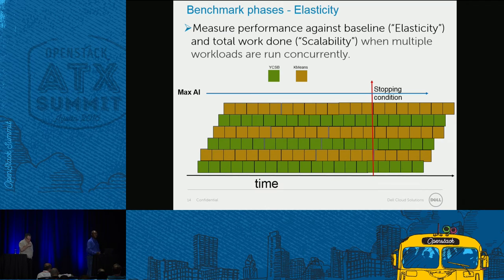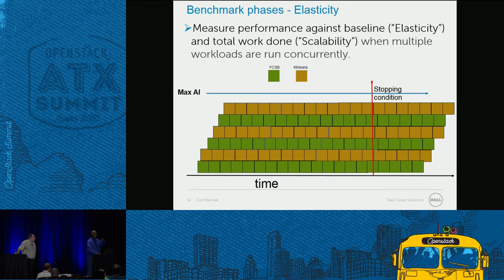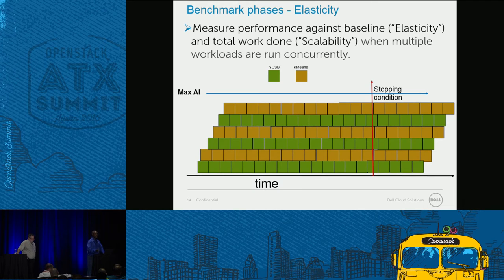During the elasticity phase, submitters keep adding workloads one after the other until a predefined number of application instances is reached. The tester can set a certain number of application instances, or the benchmark stops when quality of service breaches occur. Once QoS is violated in any way, the whole benchmark stops.